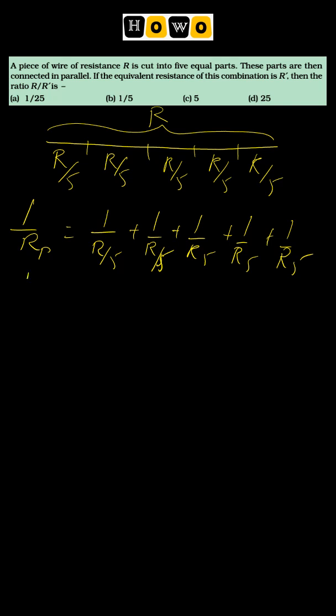So resistance in parallel will come out to be 25 upon R, and on solving this, on cross multiplying, RP value is coming out to be R upon 25. Now it is given in the question that let this equivalent resistance is R dash.